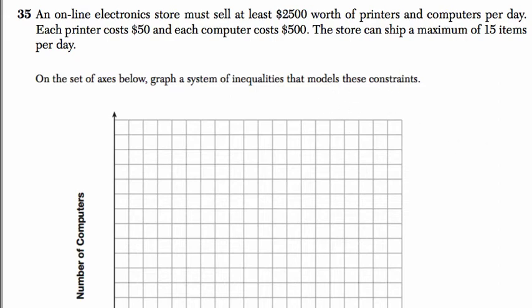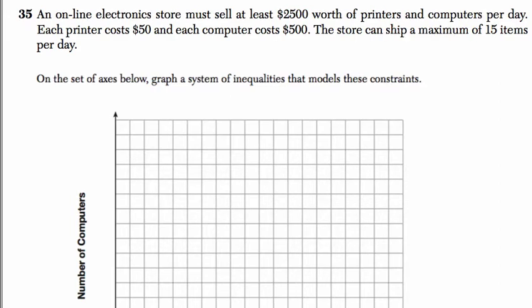So the first thing we want to do is set up an equation to break this question down. We've got to sell $2,500 worth of printers and computers. It's $50 per printer and $500 for each computer. And that amount that we sell has to be greater than $2,500. And at most we can do 15 items per day. So the printers and computers at most can be 15. So the number of printers and computers is less than or equal to 15.